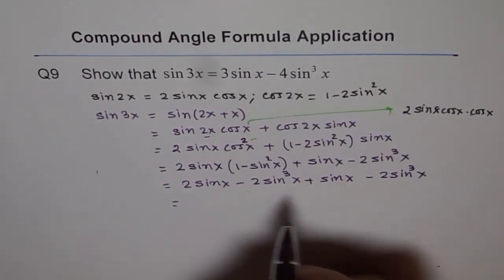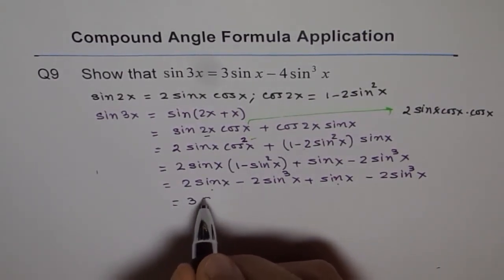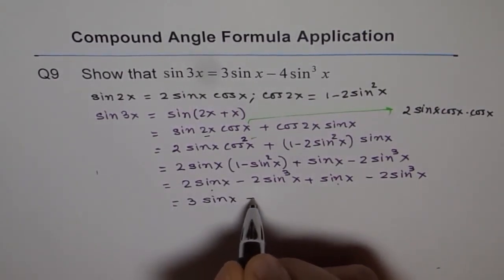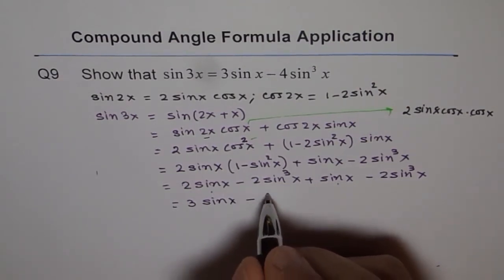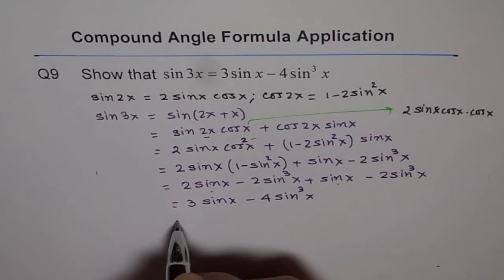Now let's combine the like terms. 2 sine x and sine x gives us 3 sine x. Minus 2 minus 2 gives me 4 sine cube x. And that is the right side.